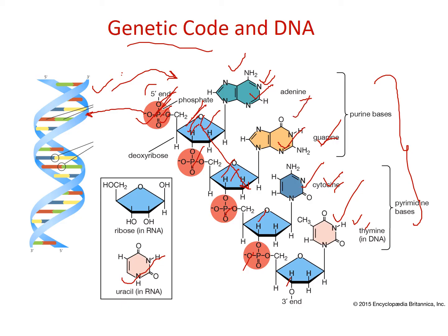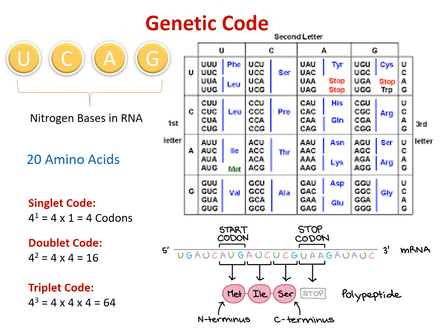These four nitrogen bases — adenine, guanine, cytosine, and thymine — are considered the four alphabets of the DNA molecule. These four alphabets are used to write the genetic code. George Gamow was the first person to propose the basic structural unit of the genetic code. The basic problem is how information written in four-letter language of nitrogen bases can be translated into the 20-letter language of amino acids.